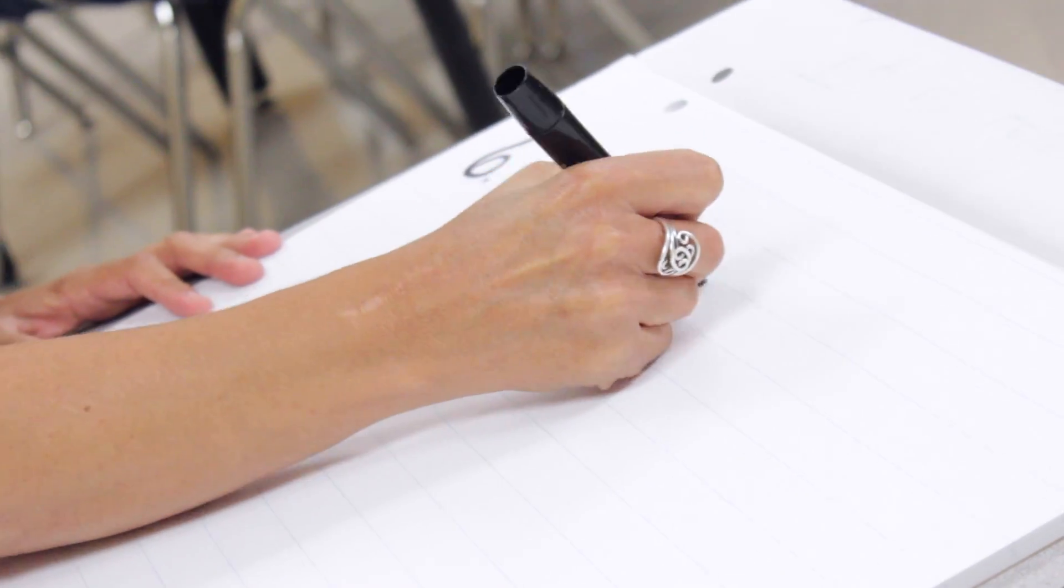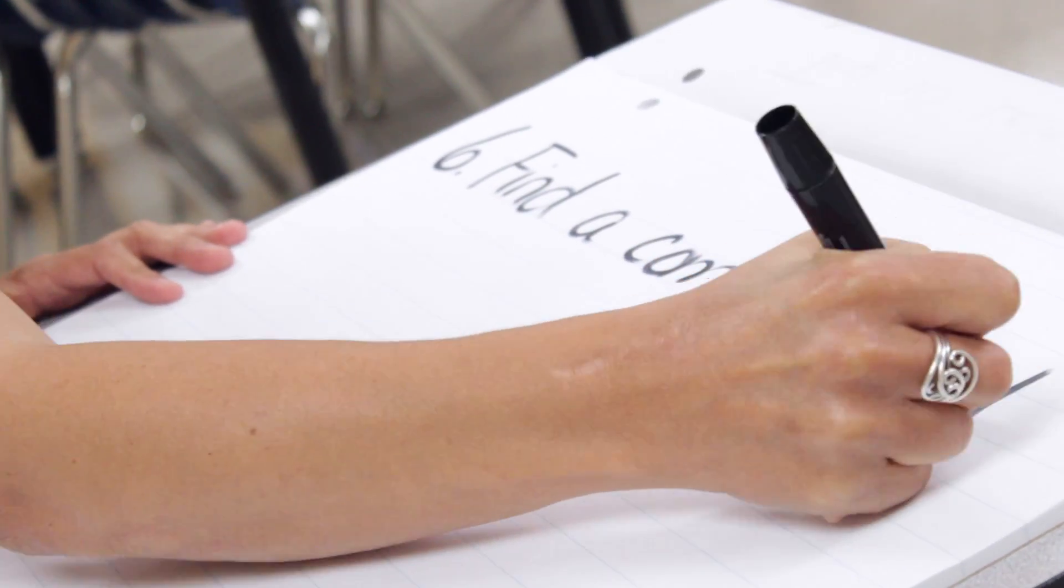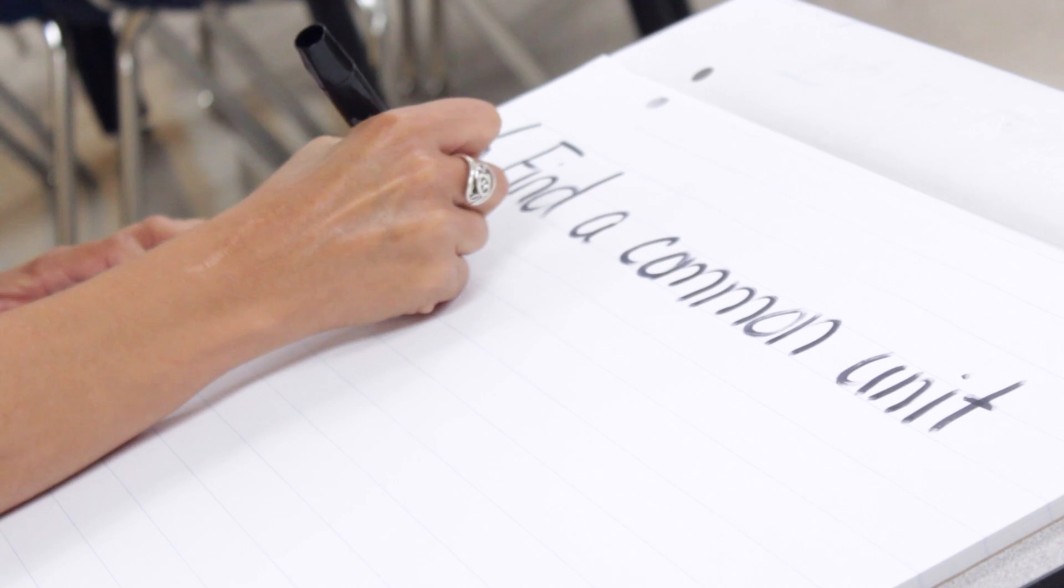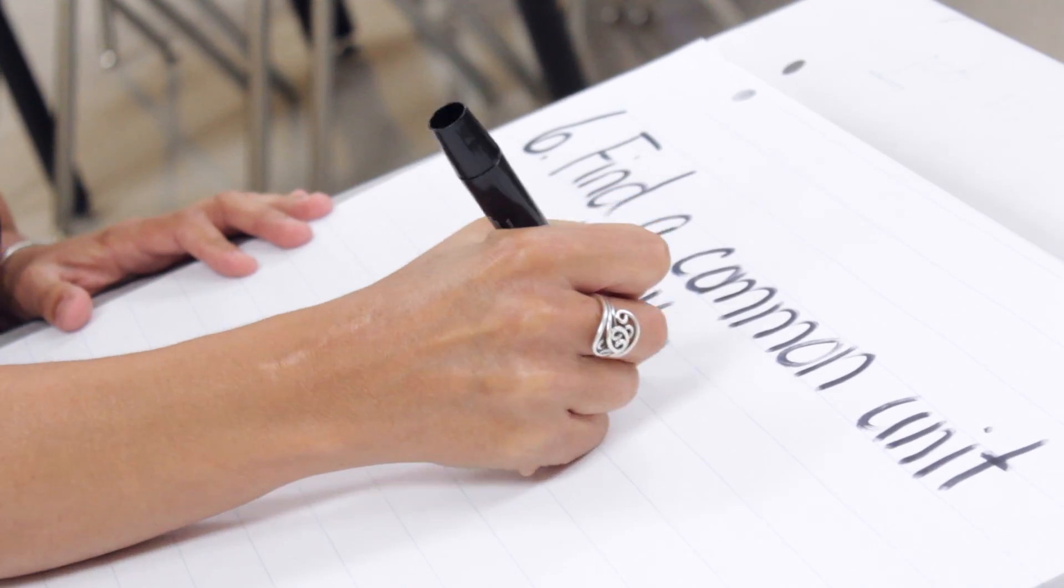The sixth lesson learned is that we need to find a common unit rather than a common denominator that helps students to connect to their prior knowledge of units including thinking about measurement and place value.